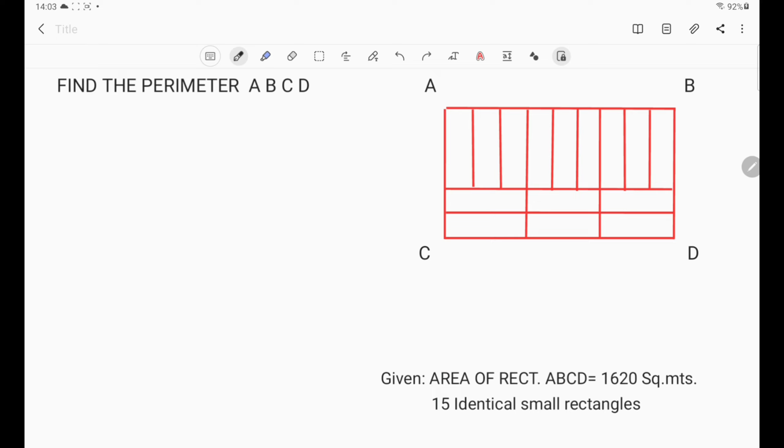If we let x be the width of the small rectangle, we will label it. Okay, there are nine.